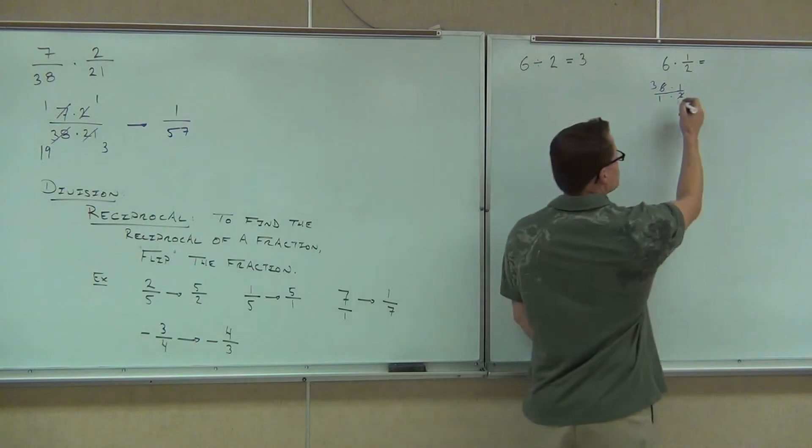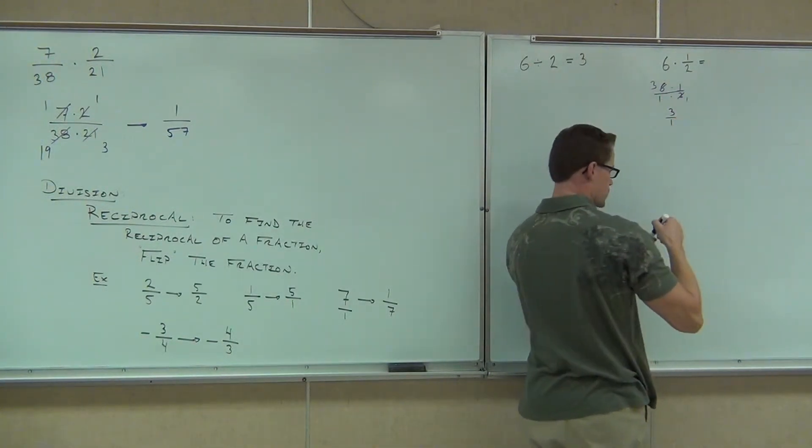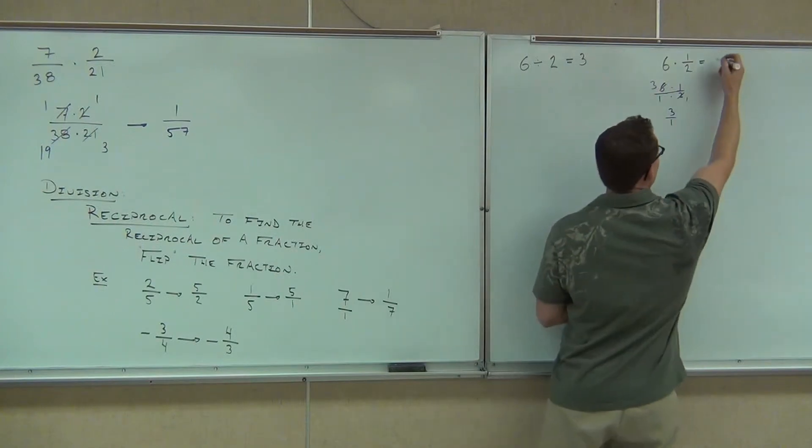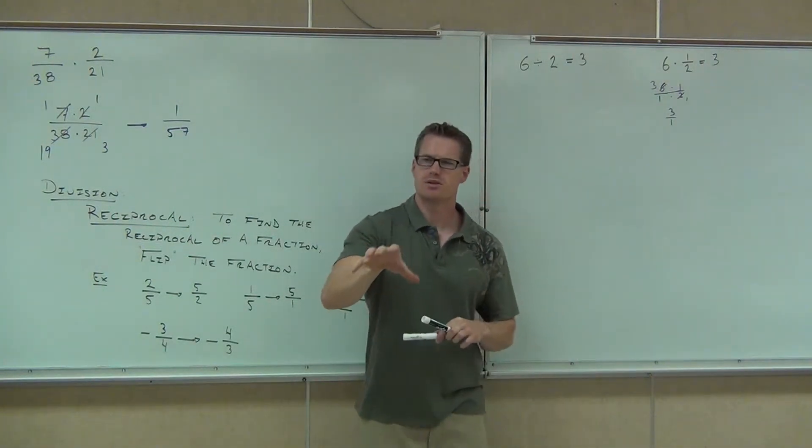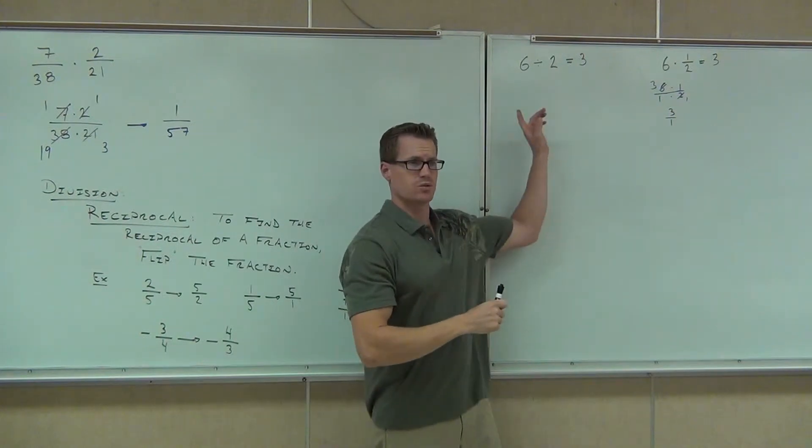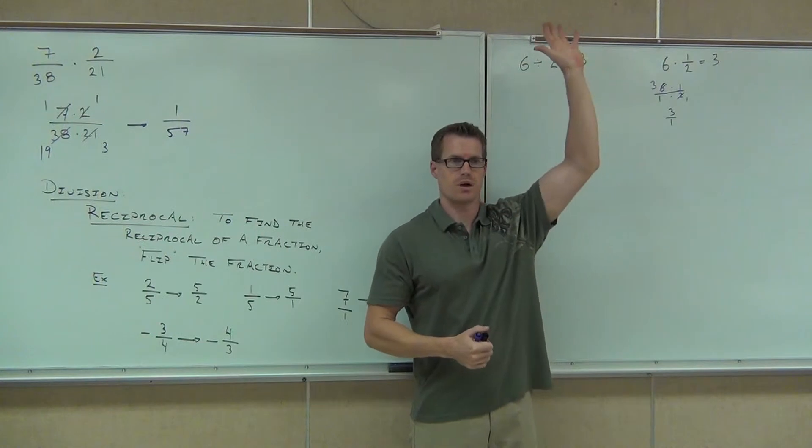I would definitely get 3 over 1 or, in other words, just 3. Okay, now look up here. Do you guys agree that 6 divided by 2 is 3, and also 6 times 1 half is also 3? Raise your hand if you're all right with this so far. Here's the point.